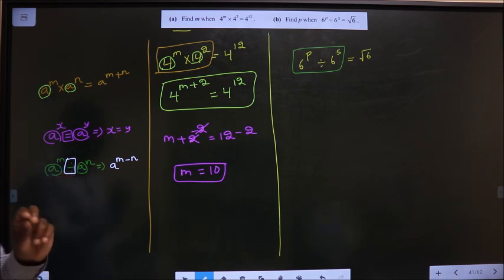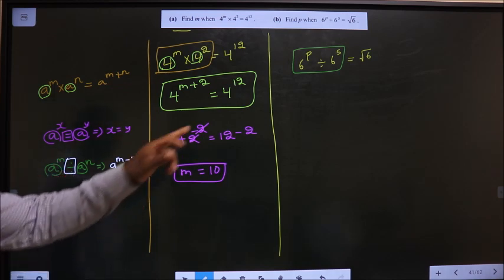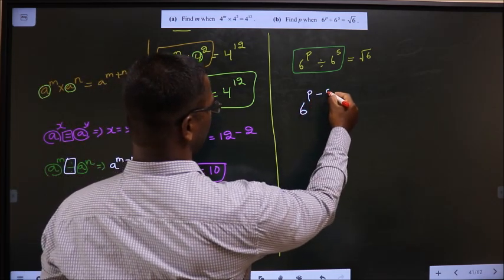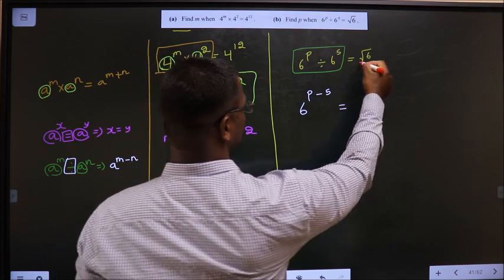Bases are same, division, so subtract the powers. Applying that here: 6^(p-5) on the left side.